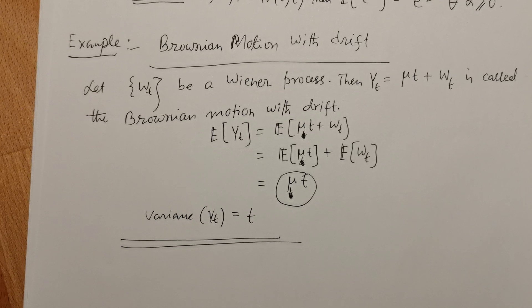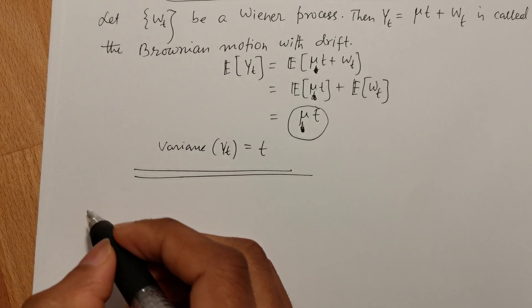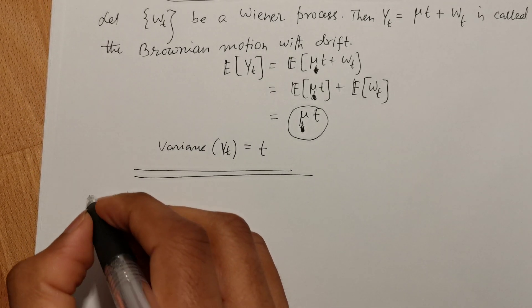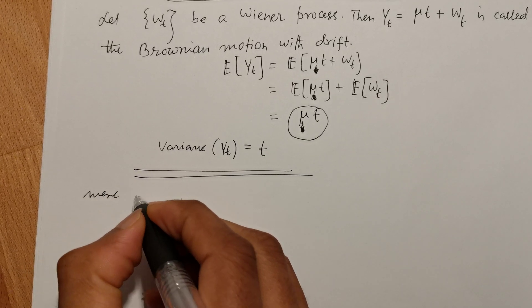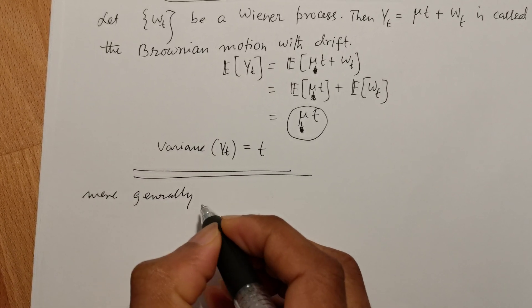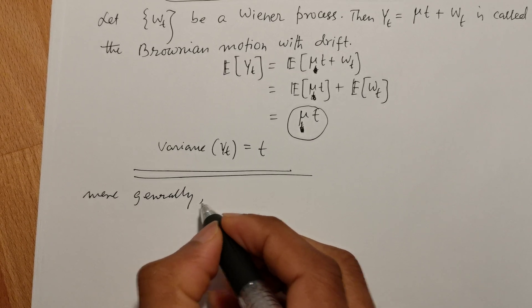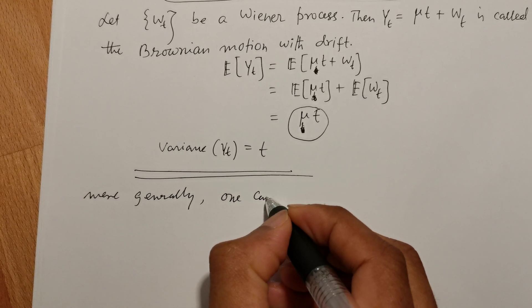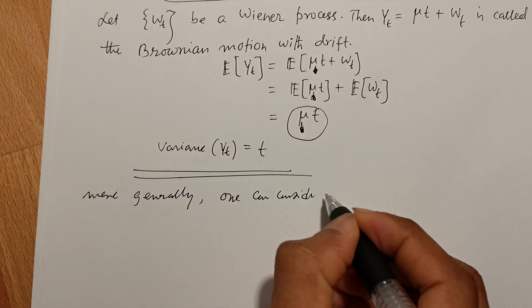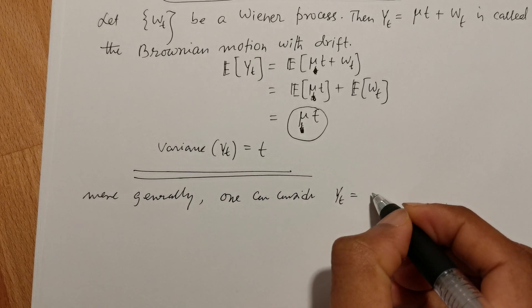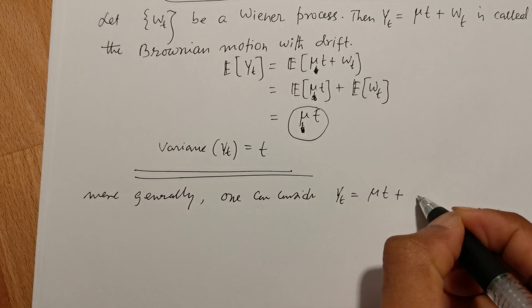So more generally, one can consider Yt = μt + σWt.